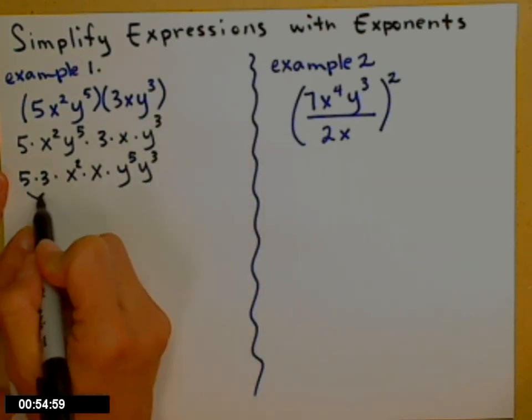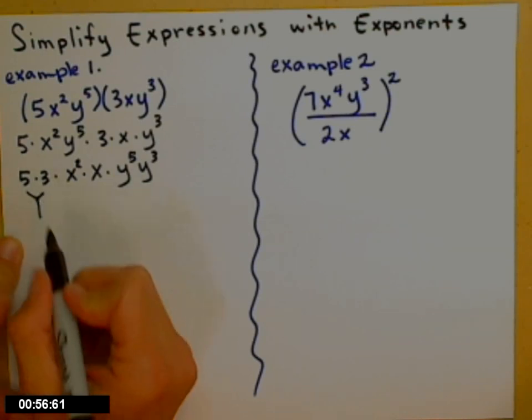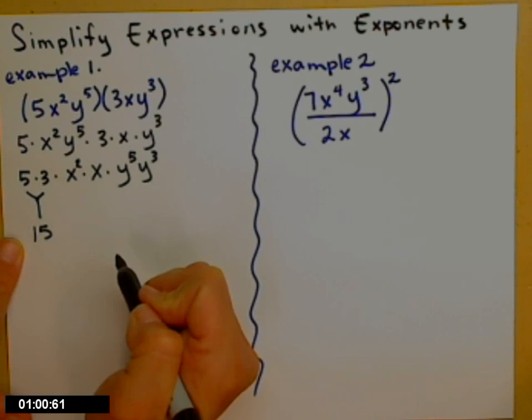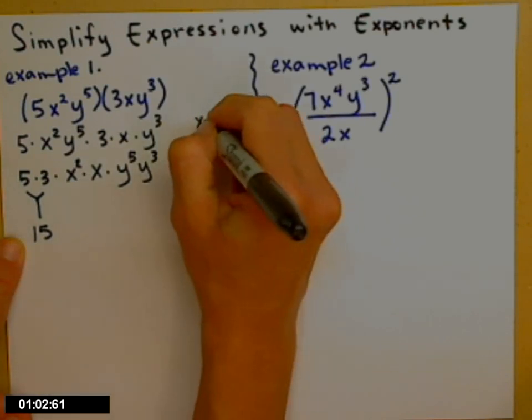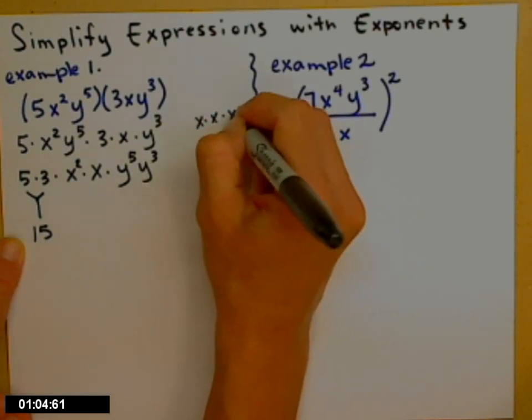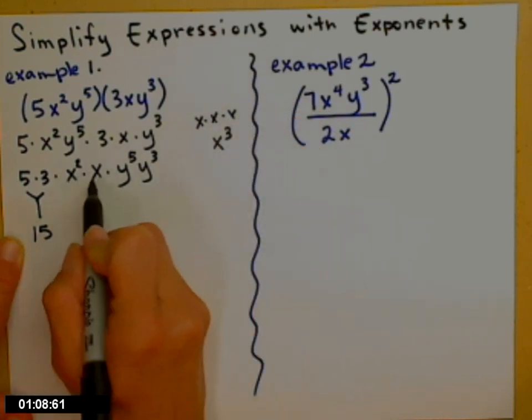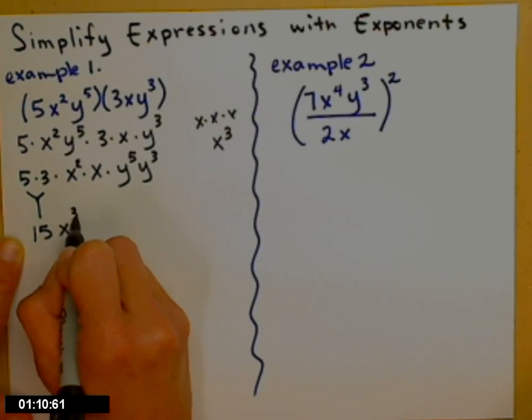Now, it should look like something totally doable. 5 times 3 is 15. x squared times x. Remember, x squared, x times x, times one more x. Now I have three of them. x cubed. Multiply like bases, add the exponents.